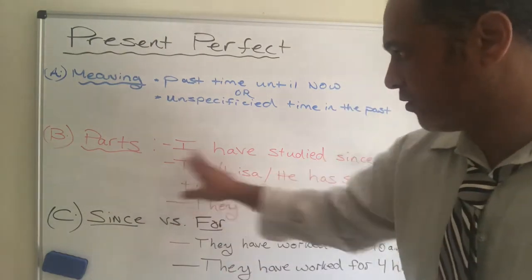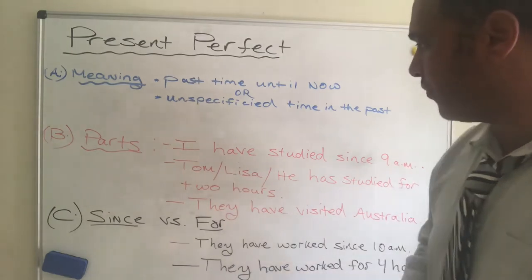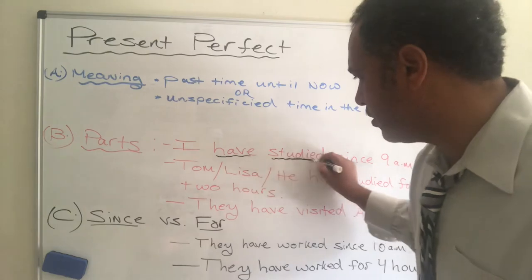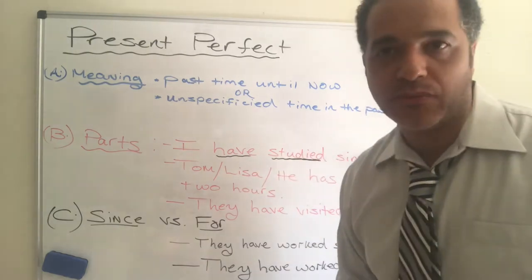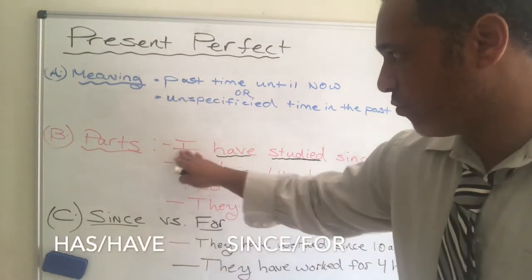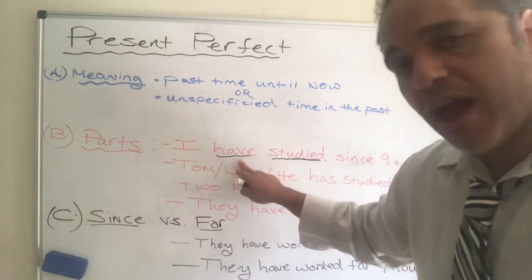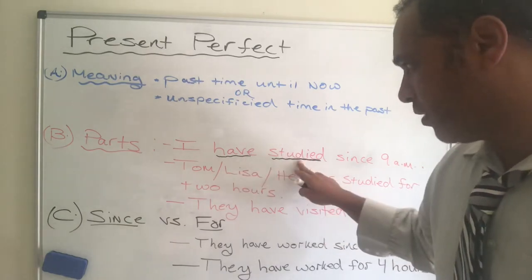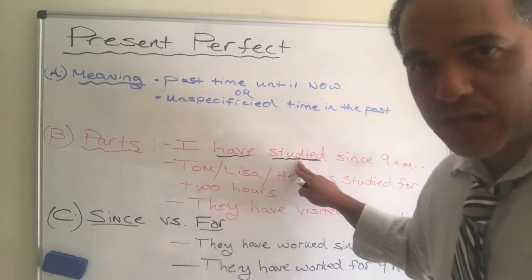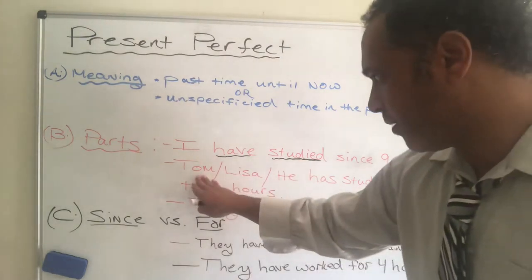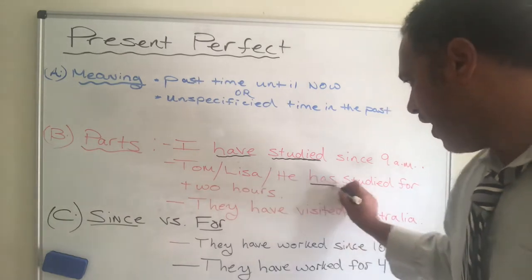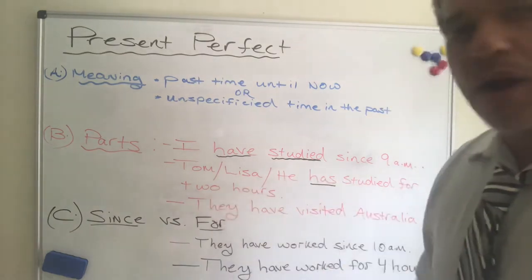The parts: there are basically two parts. You either need to use have or has, plus the past participle. If you have subjects like I, you, or we, it's going to be have, and then the past participle — which a lot of times is the same as the past tense, but sometimes it is not. If we change the subject — Tom, Lisa, or he — then it's has: for example, he has studied for two hours.